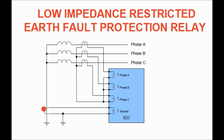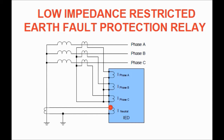Here the connection of the low impedance type restricted earth fault relay is shown. The neutral CT ratio is not the same as the bushing CT or phase CT ratio. The connection is simple: S1 terminals of the red, yellow, and blue phase CTs are taken respectively to the red, yellow, and blue phase coils of the relay, and the other terminals are shorted together to form the neutral and taken back to the CT junction box. Star formation is done in the CT JB. For the neutral CT secondary, S1 is taken to the neutral coil of the relay and the other terminal is taken back to S2.